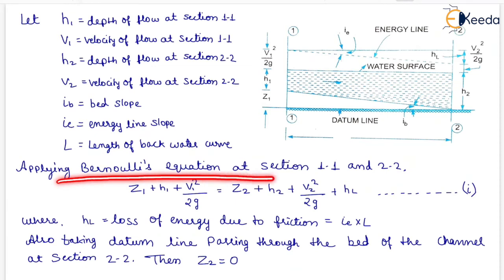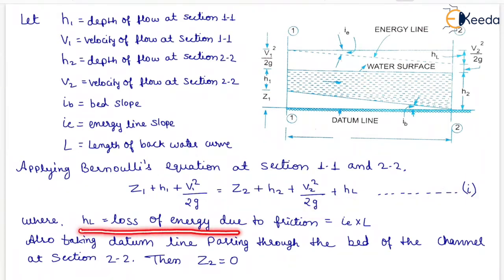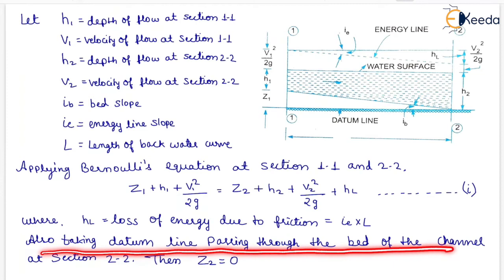Applying Bernoulli's equation at section 1-1 and 2-2, Z1 plus H1 plus V1 square upon 2G equals Z2 plus H2 plus V2 square upon 2G plus HL which is our first equation. Where HL is the loss of energy due to friction which equals iE into L. Also taking datum line passing through the bed of the channel at section 2-2, then Z2 equals 0.